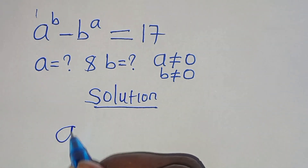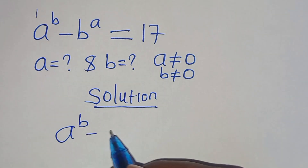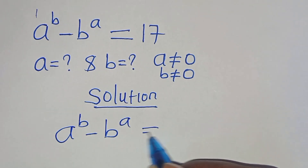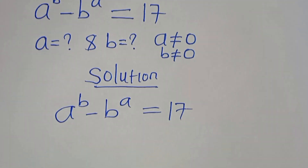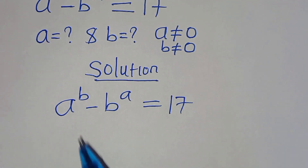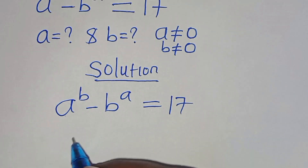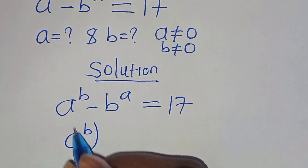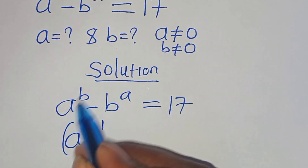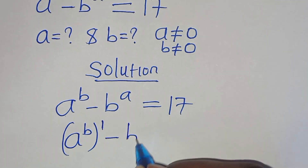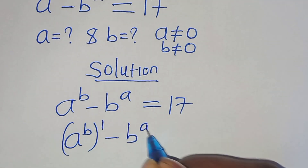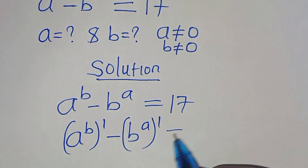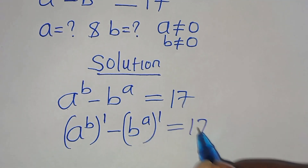Now, a to the power of b, subtract b to the power of a, this is equal to 17. We can express a to the power of b raised to the power of 1, minus b to the power of a raised to the power of 1, this is equal to 17.